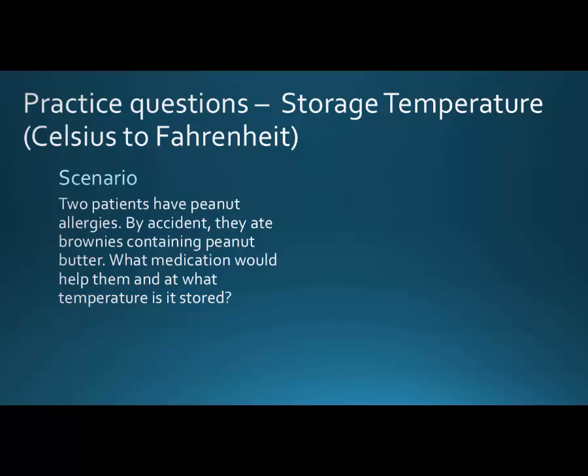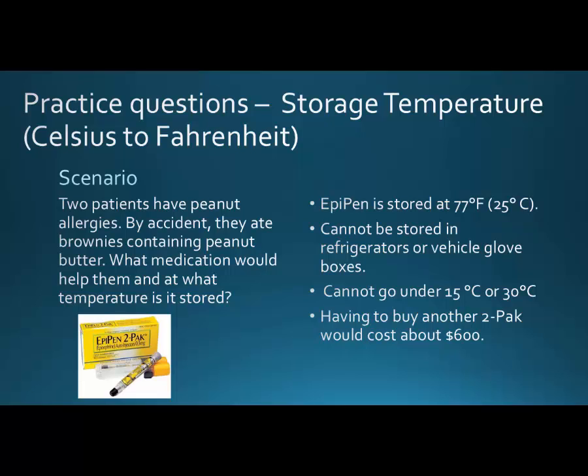Here's a storage temperature question. Two patients with peanut allergies accidentally eat brownies containing peanut butter. The medication we would use is an EpiPen, stored at 77°F — that's the upper end of the 20 to 25 degrees Celsius room temperature range. It can't be stored in refrigerators or vehicle glove boxes. We need to be careful: it can't go under 15 or above 30 degrees Celsius, and having to buy another two-pack would cost about $600.